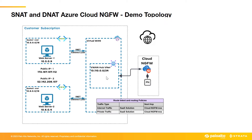Coming to the deployment topology, I have two VNets where I have two different web servers hosted, and these two spoke VNets are connected to Azure Virtual WAN using the VNet connection. All this infrastructure is part of the customer subscription, and Cloud NGFW is integrated into the Azure V-WAN hub. The NAT capabilities discussed are applicable for both Azure V-WAN and Azure hub-and-spoke network architectures.